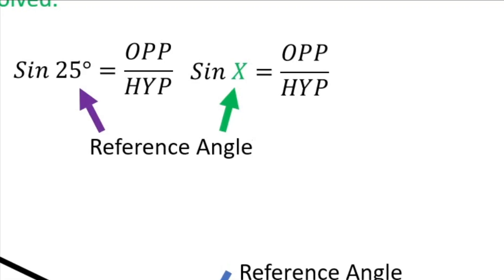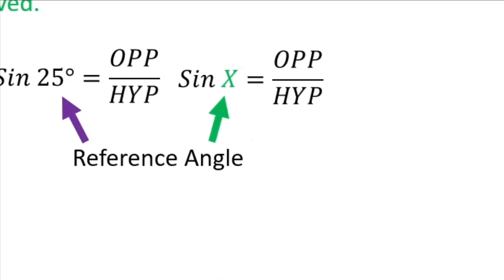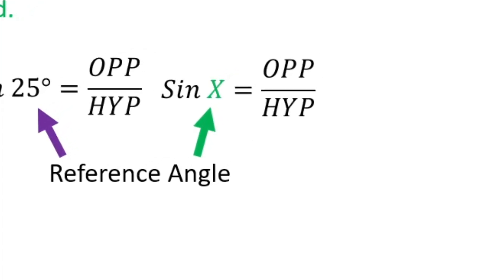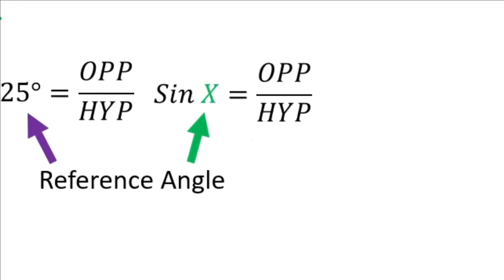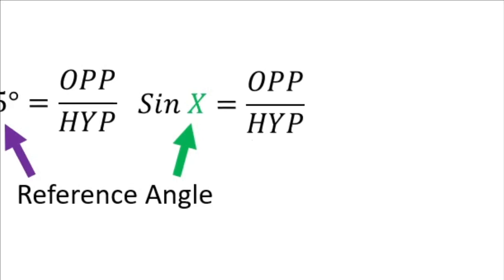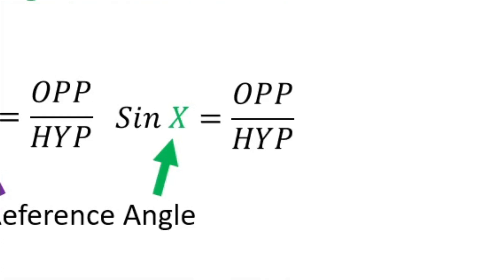In the second example, sine x equals opposite over hypotenuse. If the 25 degree angle was not known, it would be referred to with this variable x. It is still the reference angle. It is the angle that the formula is referring to.